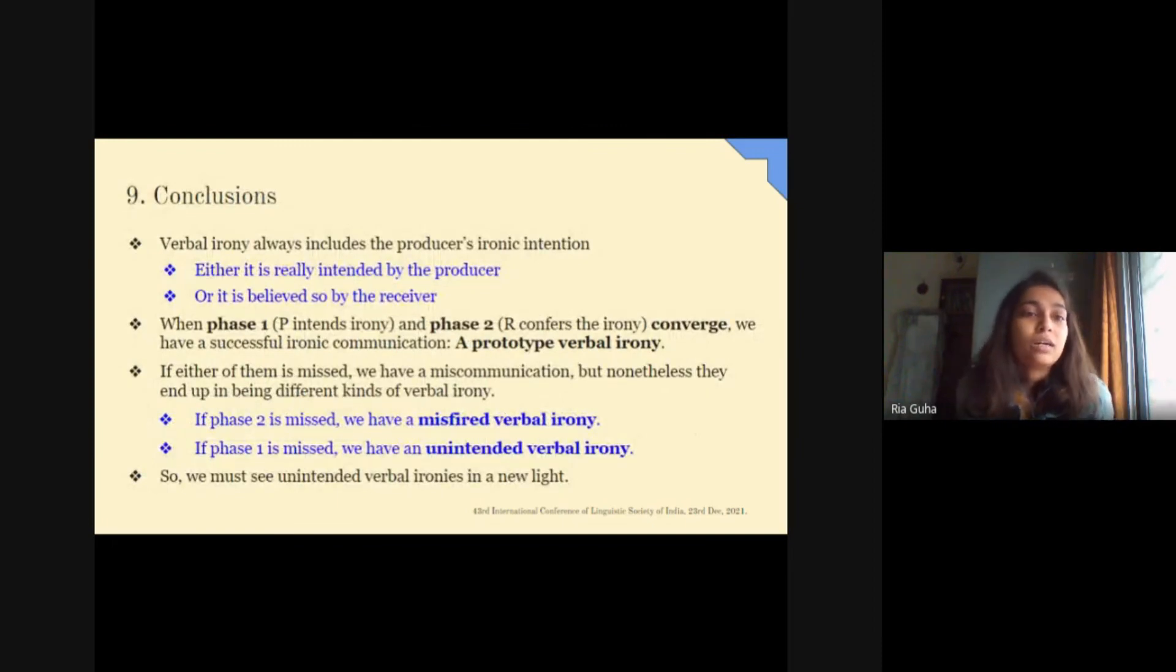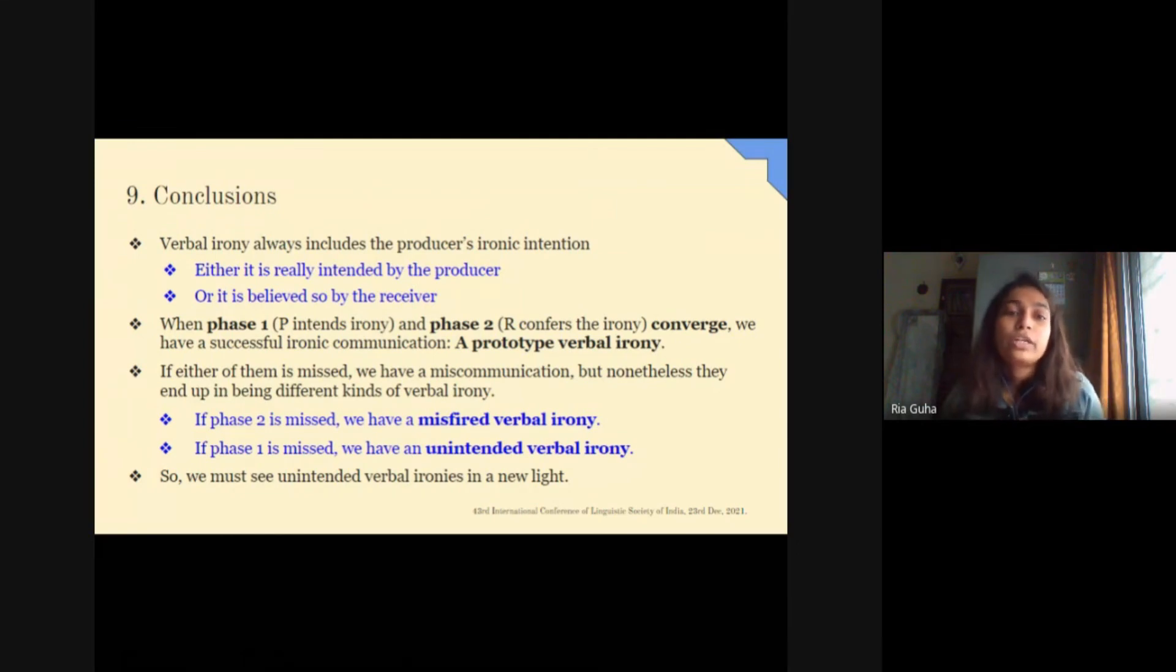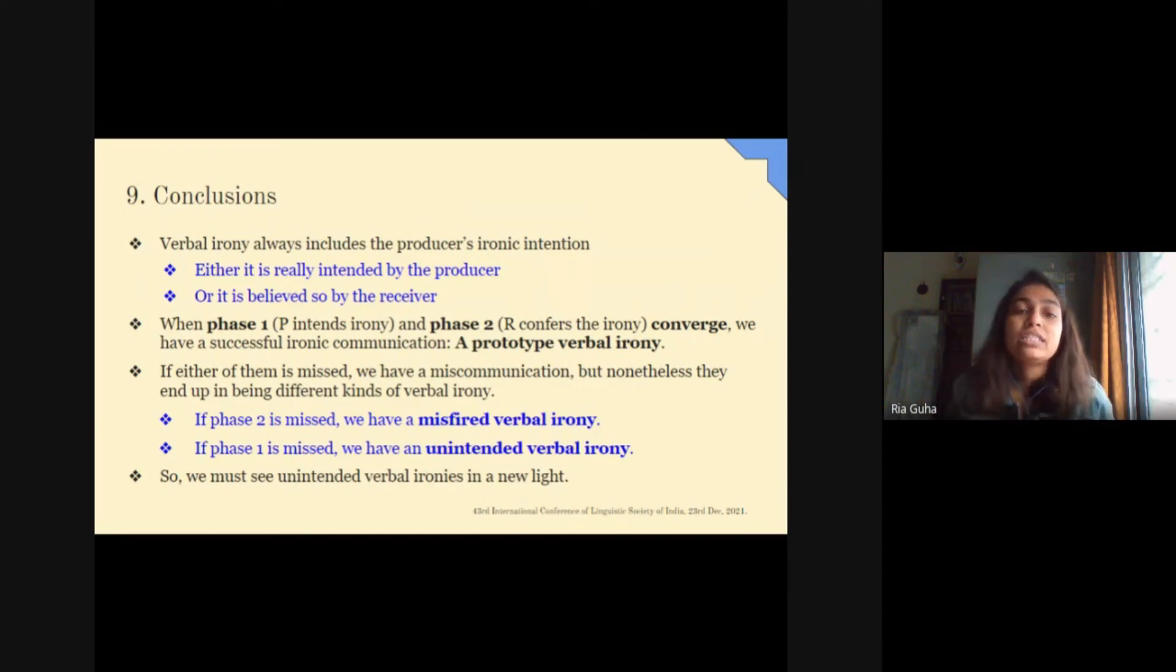To conclude, verbal irony always includes the producer's ironic intention. Either it is really intended by the producer or it is believed so by the receiver. When phase 1, where P intends the irony, and phase 2, where R confirms the irony, converge, we have a successful ironic communication, a prototype verbal irony. If either of them is missed, we have a miscommunication, but nonetheless they end up in being different kinds of verbal irony. If phase 2 is missed, we have a misfired verbal irony. If phase 1 is missed, we have an unintended verbal irony. So we must see unintended verbal ironies in a new light.